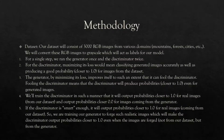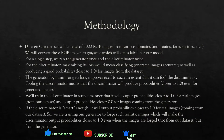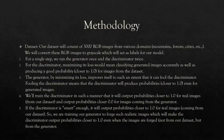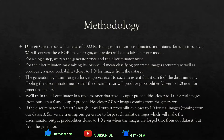Regarding the methodology, the dataset contains around 3000 RGB images from various domains like mountains, forests, and cities. We convert these RGB images to grayscale, which act as labels for our model. In the first step we ran the generator once and the discriminator twice, because reading different literature on GANs, we found a state-of-the-art technique that the discriminator needs to be run more times than the generator.